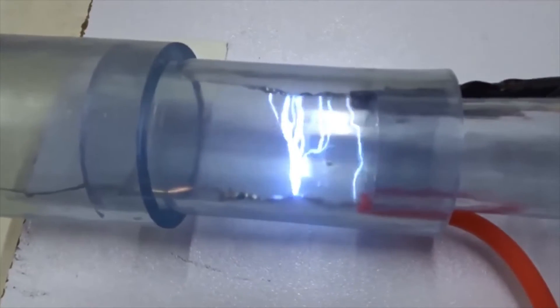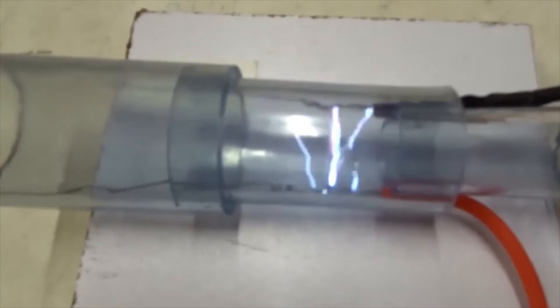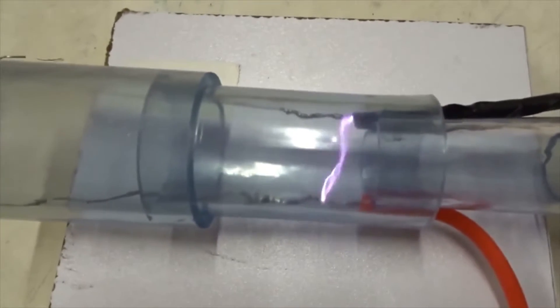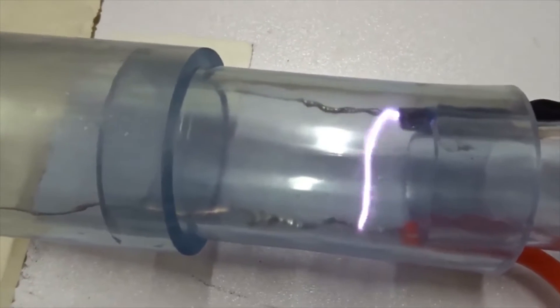The argon gas conducts and ionizes more easily than air, so it makes a current between the two electrodes, and we get a kind of Jacob's ladder effect as we increase the flow.